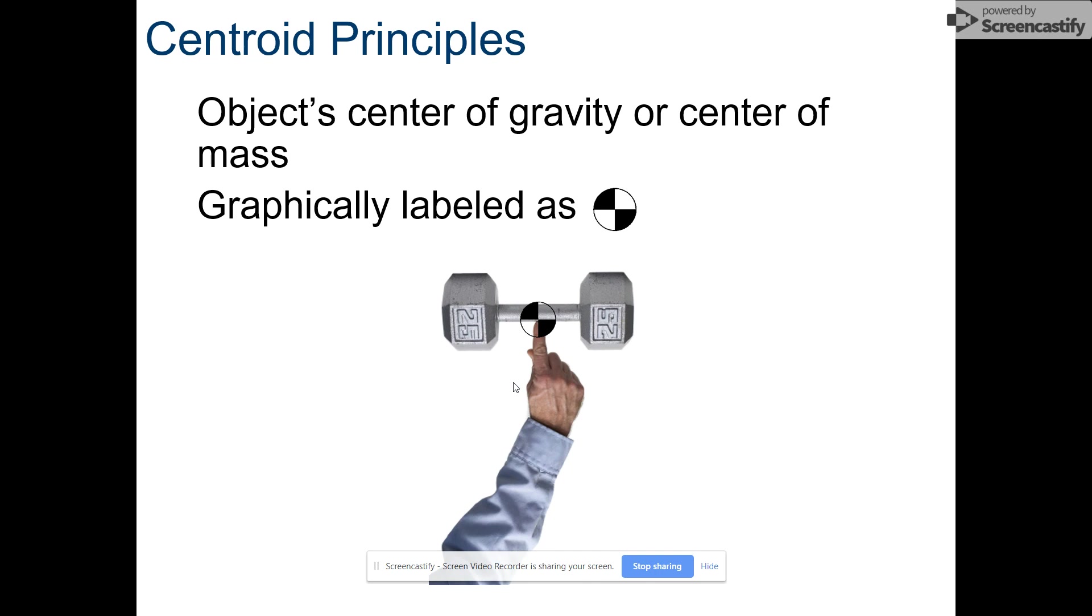An object's center of gravity or center of mass is also known as its centroid. It's labeled with the following icon that looks kind of like a nuclear waste symbol. This center of gravity, this center of mass, is where all of our forces interact when there are forces applied to an object.